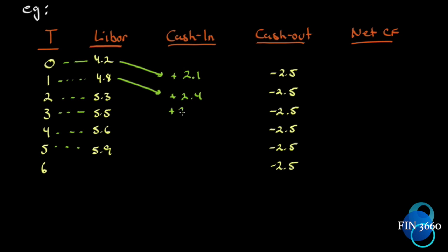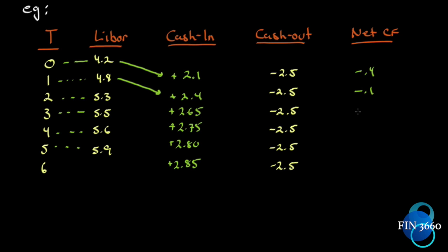Following through the payments: Microsoft receives 2.4 million, then 2.65 million, then 2.75 million, then 2.8 million, and finally 2.85 million on the last coupon date. It's not the case that Microsoft writes a check for 2.5 million and Intel writes a check for 2.1 million separately — the payments are simply netted out. On the first date Microsoft owes 2.5 and gets 2.1, so it pays 400 thousand to Intel. On another date Intel owes 2.65 and Microsoft owes 2.5, so Microsoft receives 150 thousand. Then 250 thousand, 300 thousand, and finally 350 thousand.